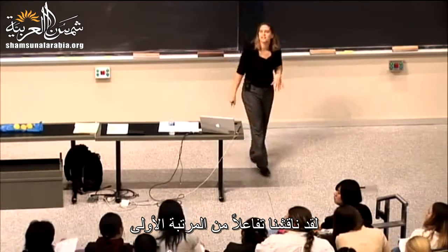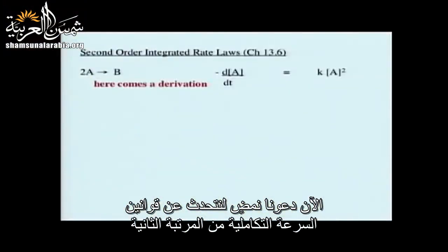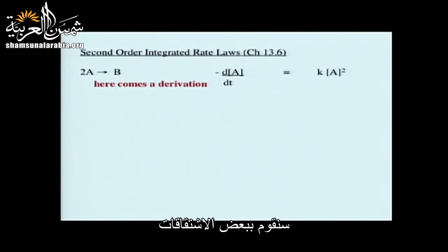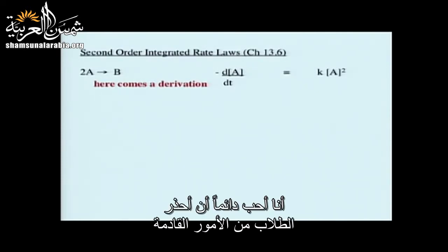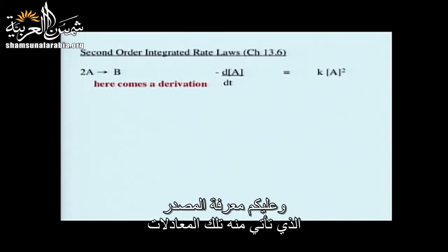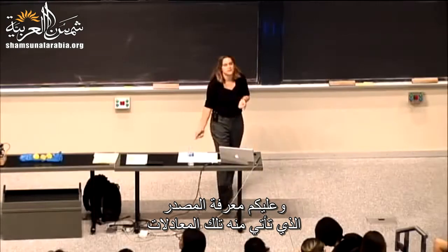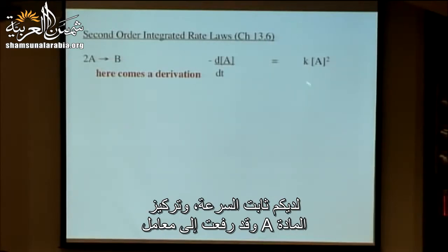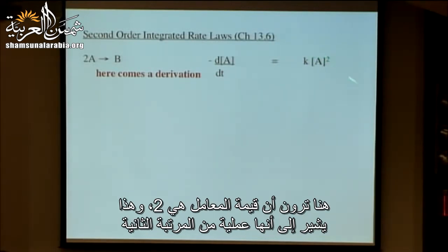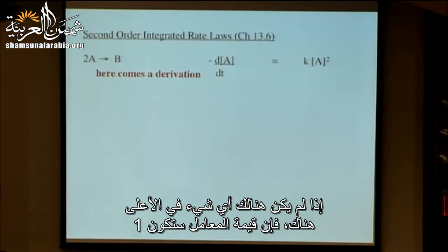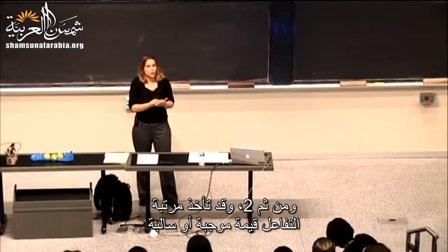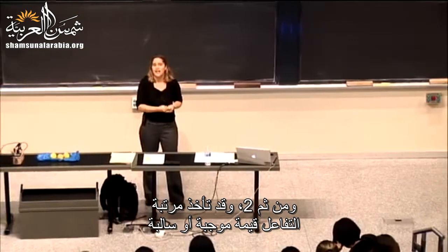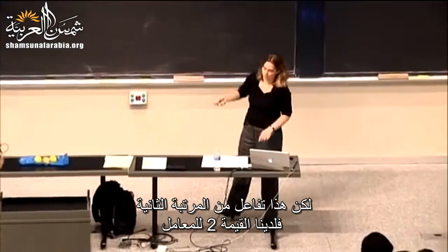Now let's talk about second-order integrated rate laws. The rate law is: rate equals k times the concentration of A squared — the exponent 2 indicates it's a second-order process. The order of a reaction can be positive, negative, integers, or fractions, but here it's 2.